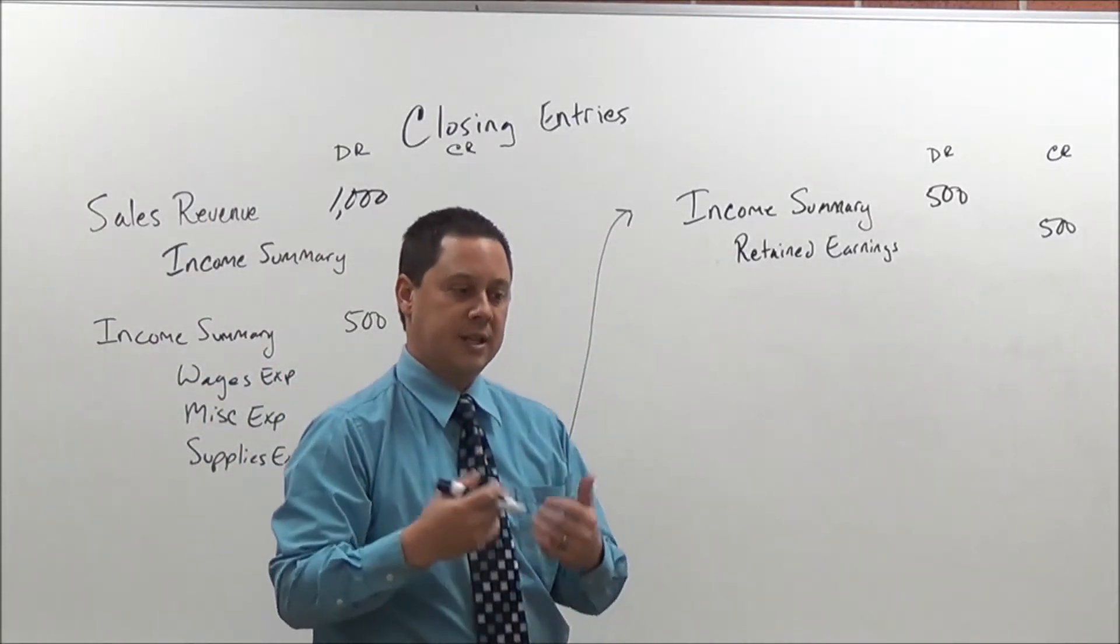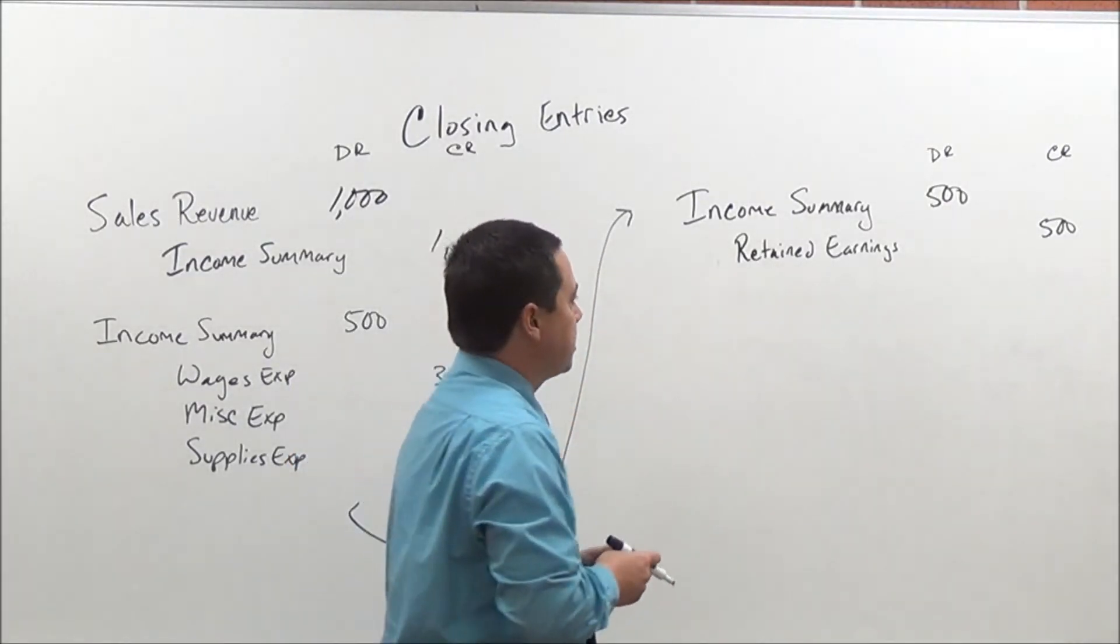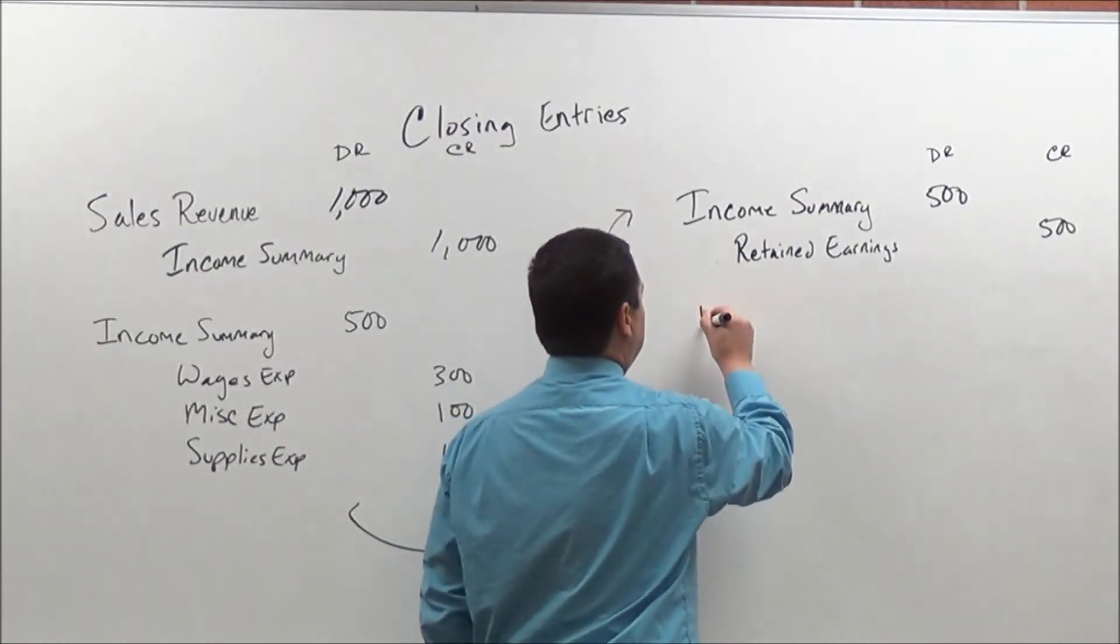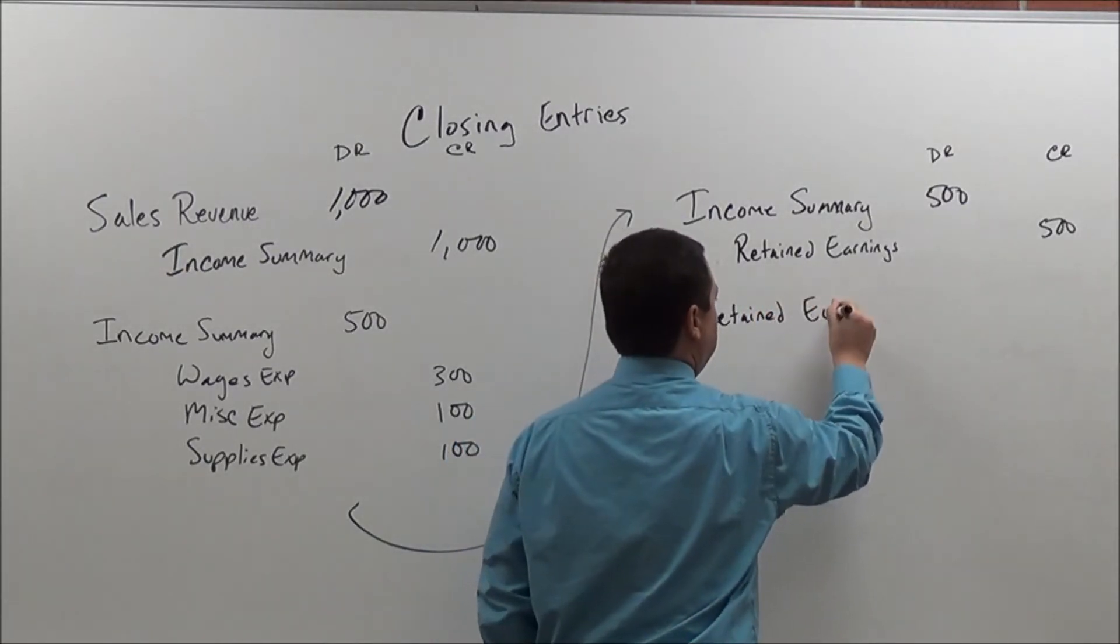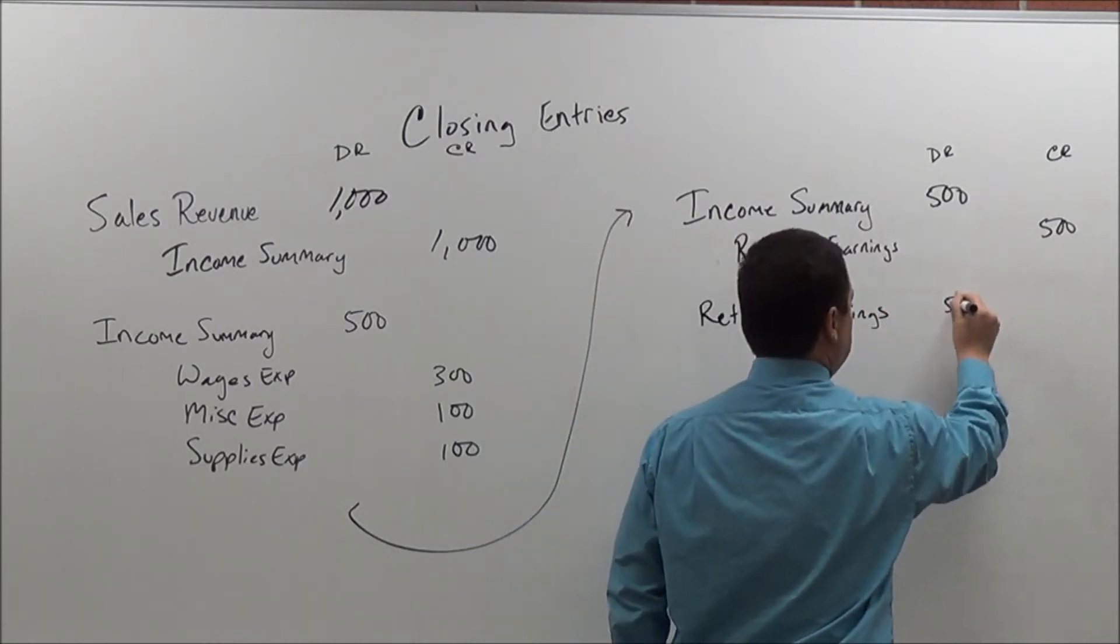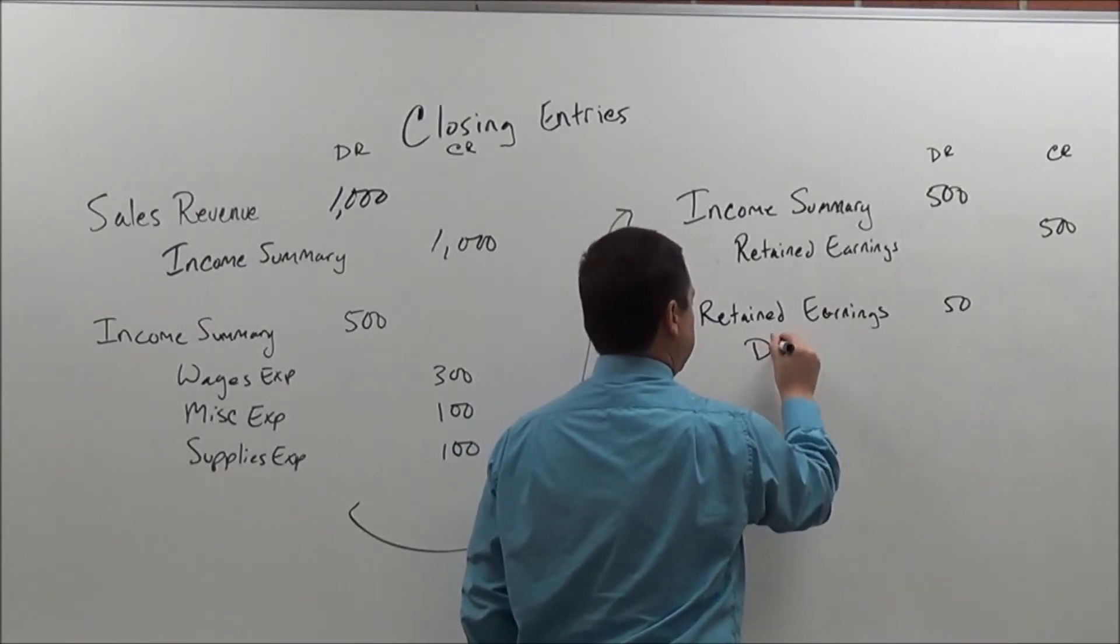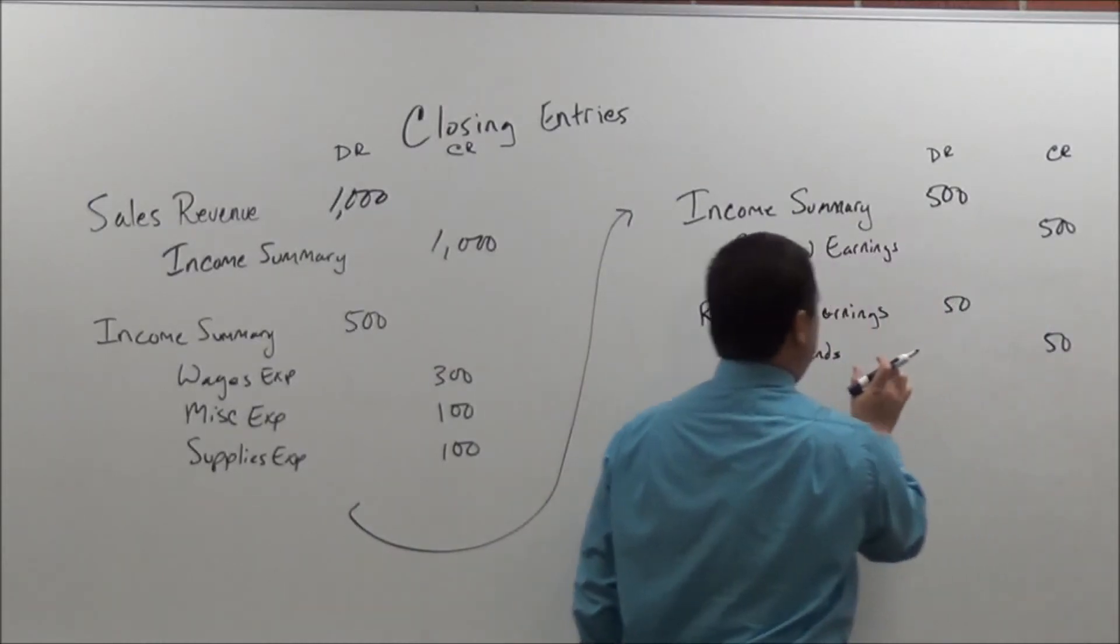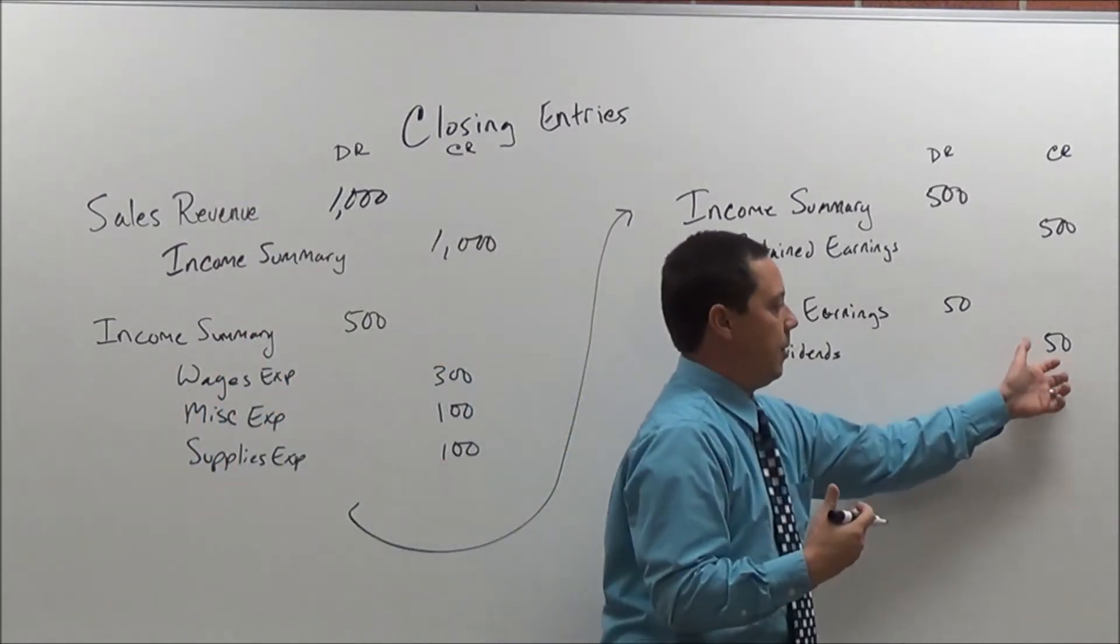And then finally, what we're going to do then is any dividends that we have. We'll close those out and put those to retained earnings. So we may have had dividends of, let's say we had dividends of $50. And we're going to take that away from our retained earnings. So we have retained earnings here, and then we have dividends. And we're closing that out. Because remember, on dividends, it would be typically a debit balance. And so now we're going to credit that and remove that.